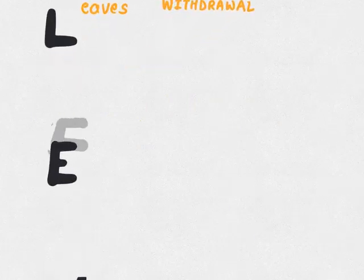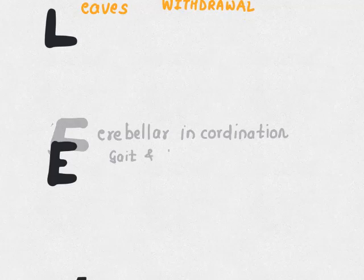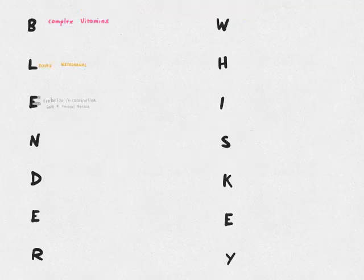C is for cerebellar degeneration. Alcoholic cerebellar degeneration typically affects the vermis and the Purkinje cells, and results in gait ataxia and truncal ataxia. This is again seen in cases of long-standing alcohol use.